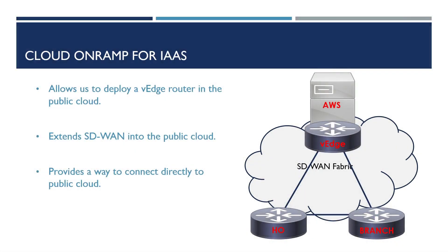The last offering we need to take a look at is Cloud OnRamp for Infrastructure as a Service. What this allows us to do is extend our SD-WAN solution into the public cloud. It does this by deploying a virtual vEdge router, thus allowing us to connect directly to our infrastructure hosted within platforms like Azure and AWS.